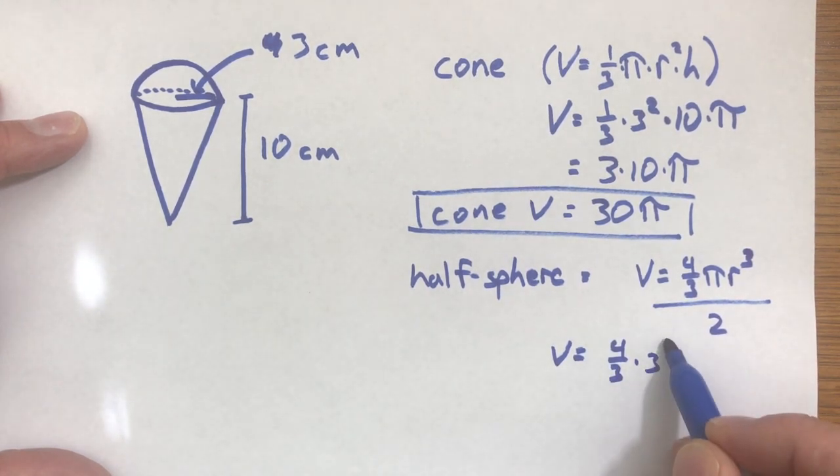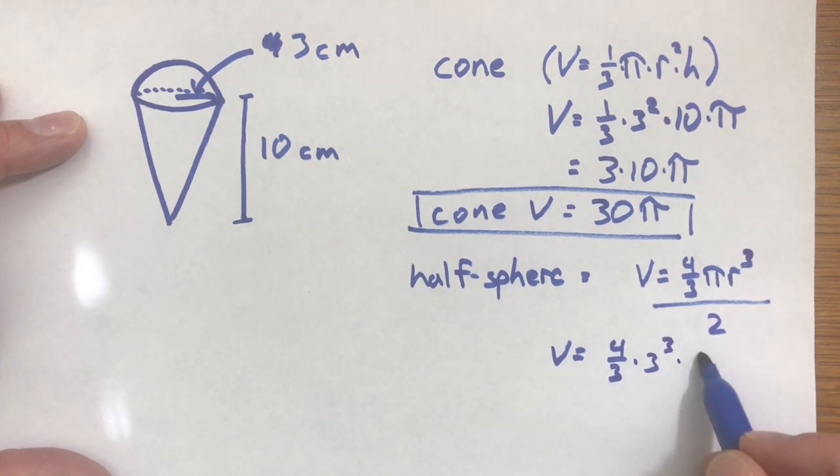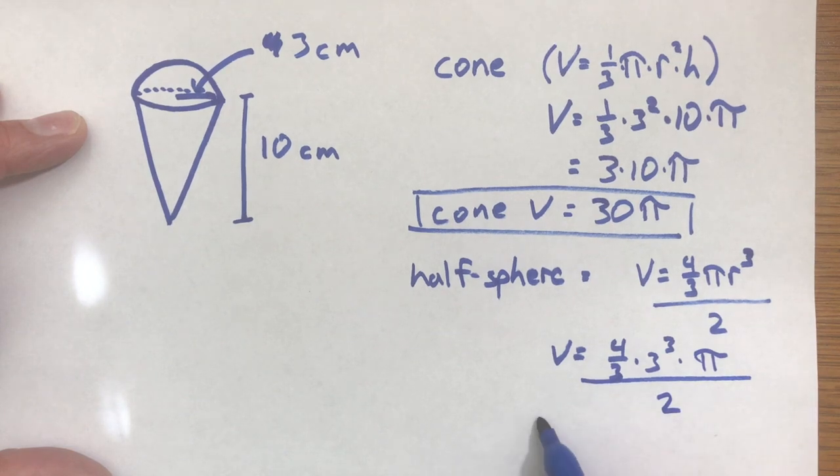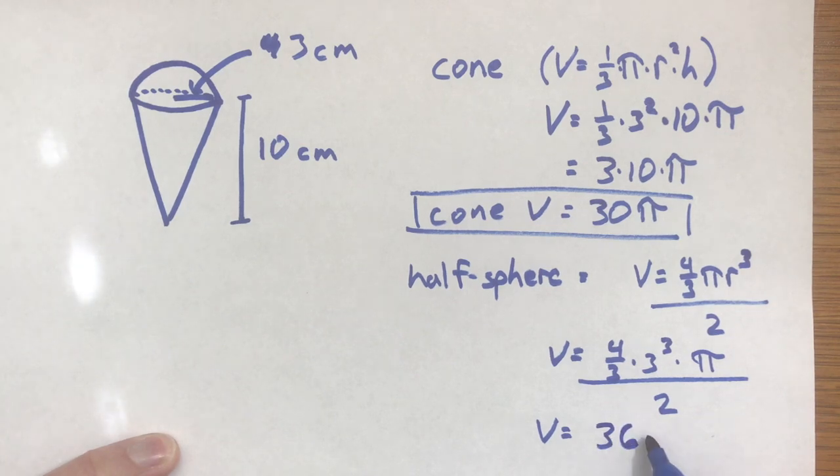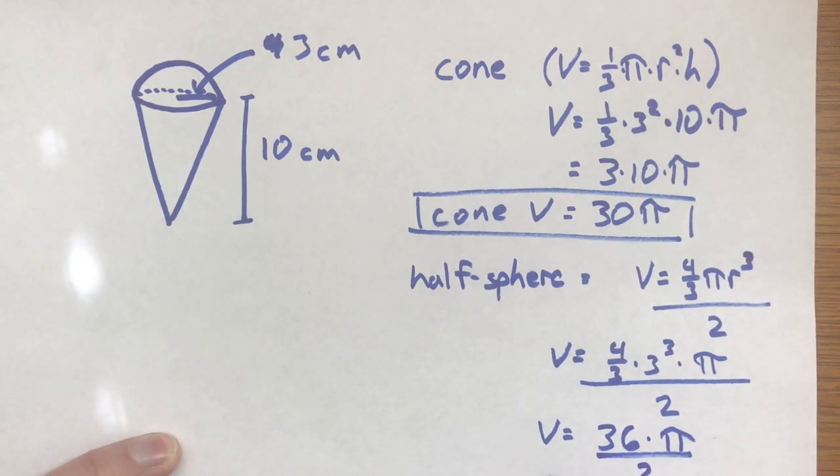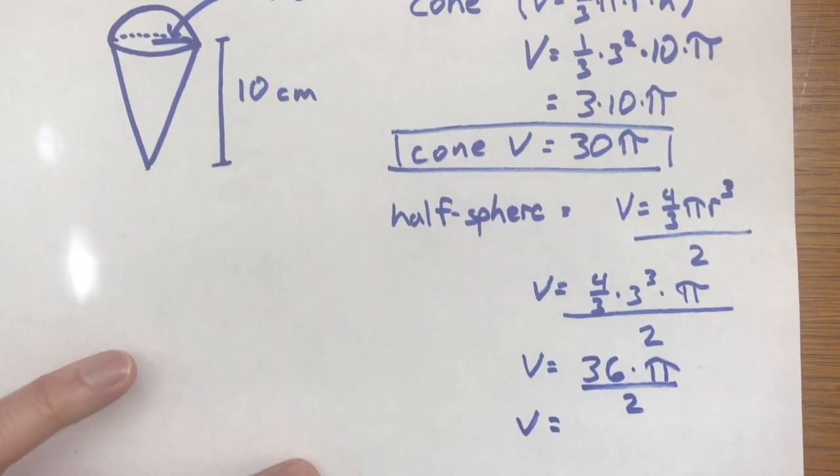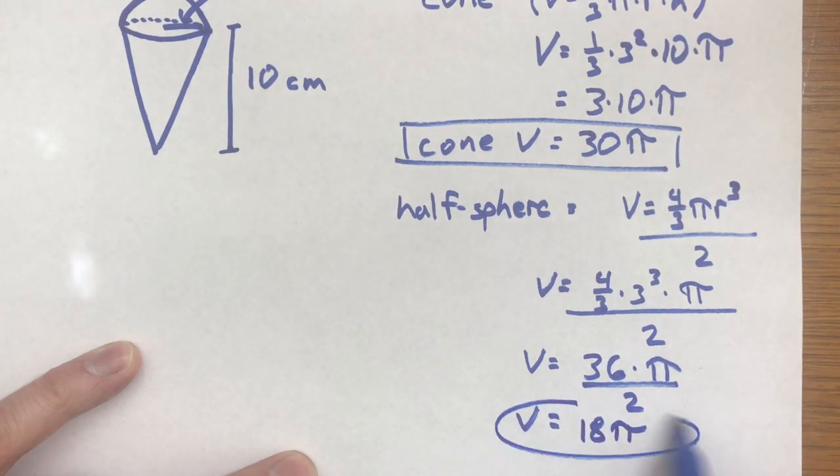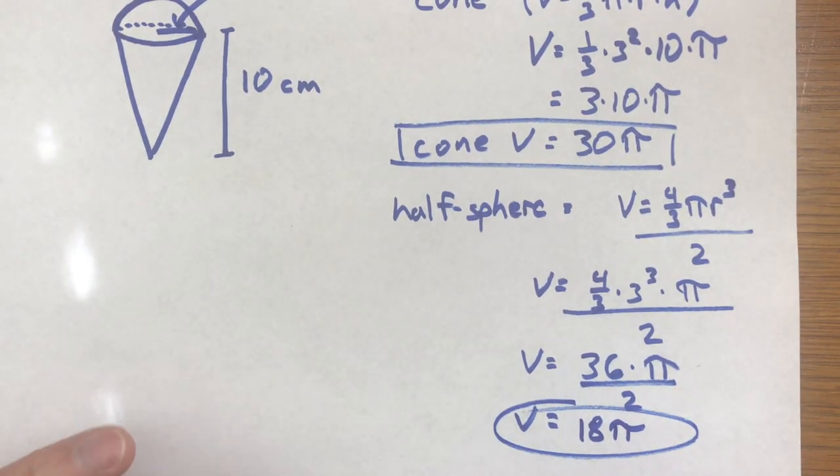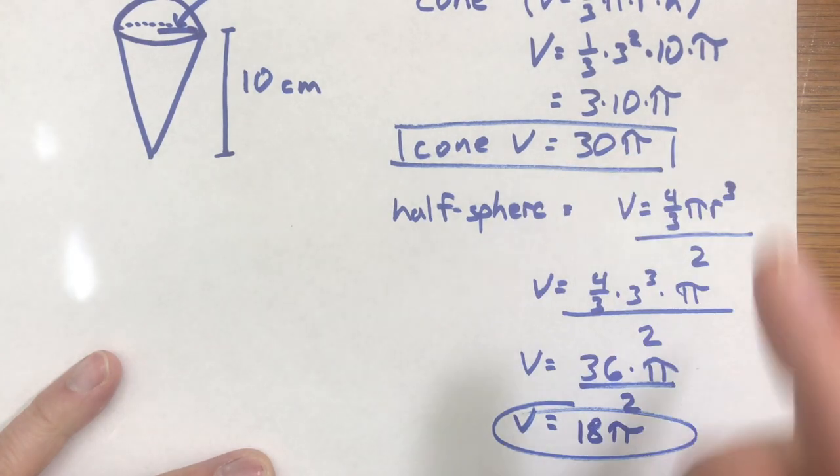So four-thirds times 27, four-thirds times 27 is 36 times pi divided by two because the divide by two is because it's half of a sphere. So four-thirds times 27 times pi divided by two is 36 pi divided by two. This is going to be 18 pi.